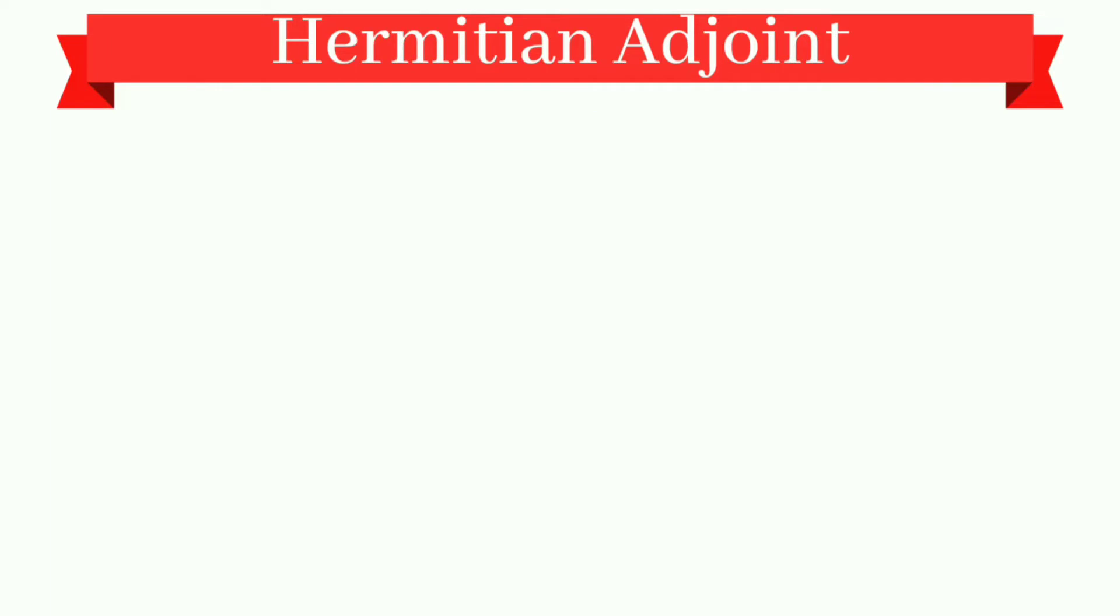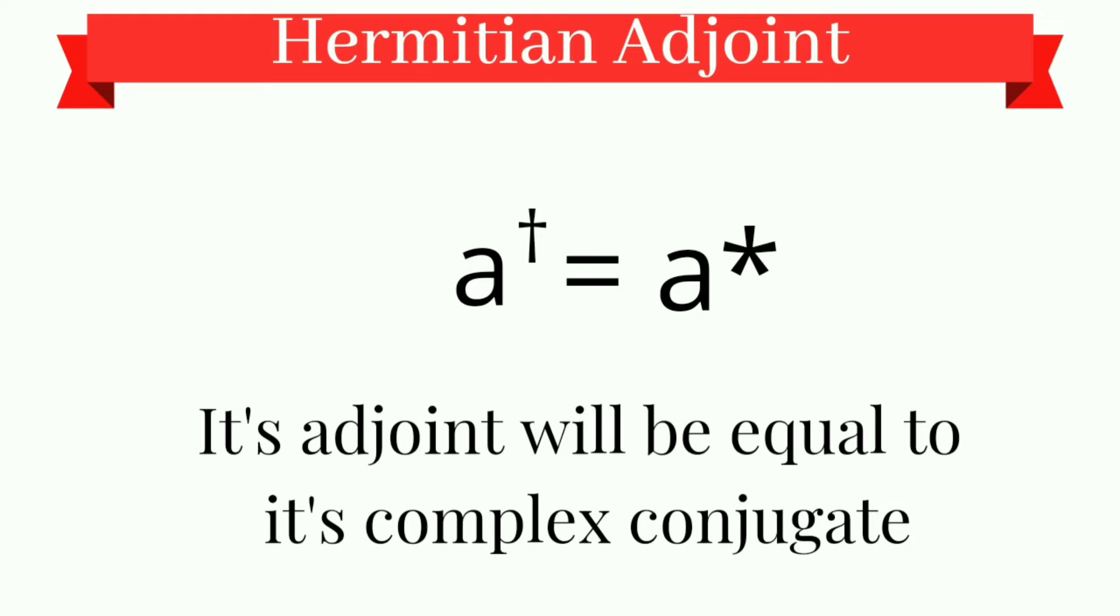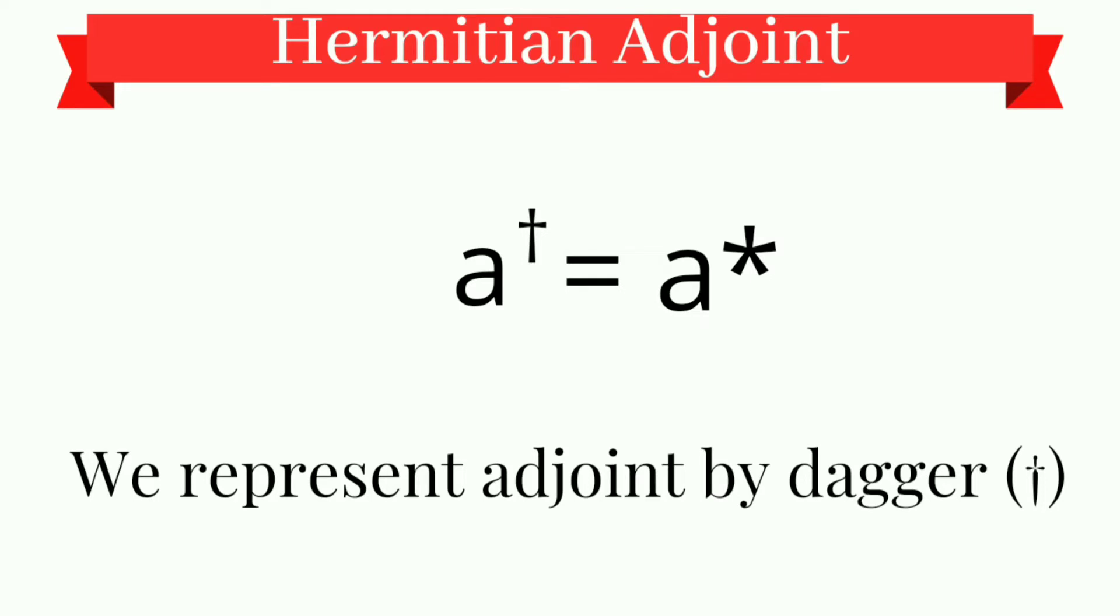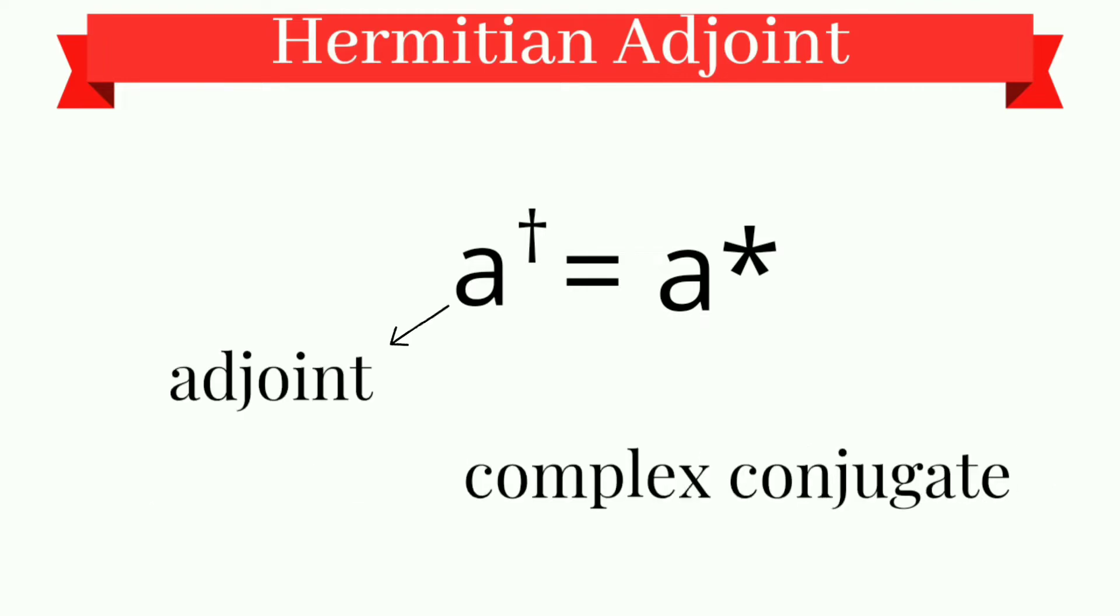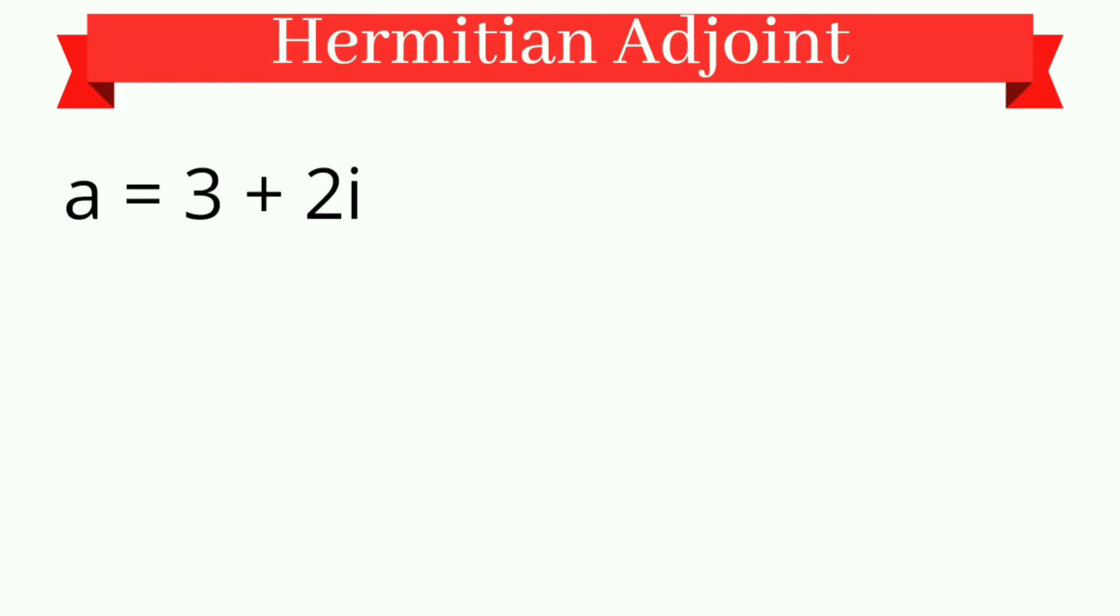Let's first take a complex number A. Then its adjoint will equal its complex conjugate. We represent adjoint by the dagger sign. So A dagger equals A star, where A dagger is the adjoint and A star is the complex conjugate. For example, let A equal 3 plus 2 iota.